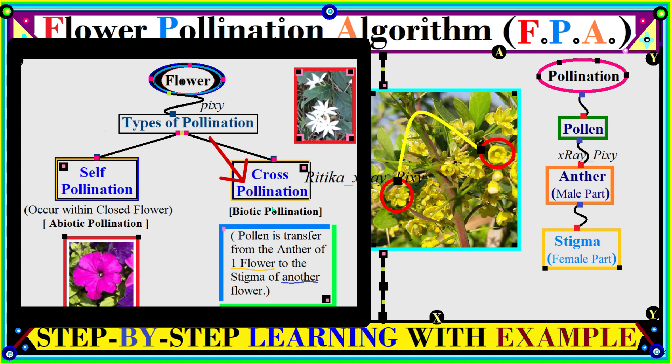Cross-pollination is the main type of pollination, also known as biotic pollination. In cross-pollination, pollinators such as bees, birds, and others are required. The pollen is transferred from the anther of one flower to the stigma of another flower. In self-pollination, pollinators are not required — it occurs within the closed flower and fertilization occurs with its own pollen. But in cross-pollination, the pollination occurs between the pollen and the ovule of different parts of the same species.